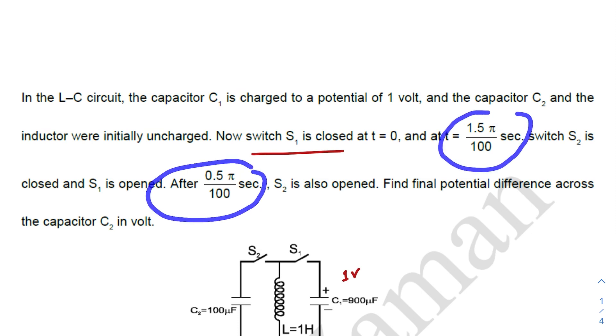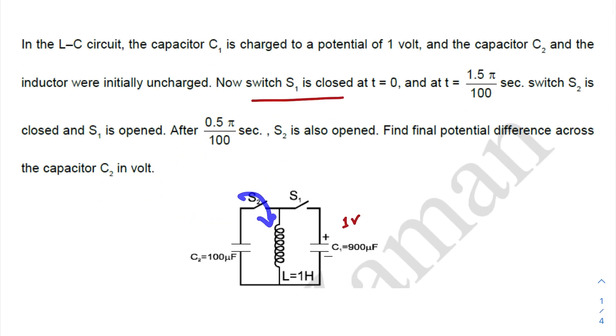Now what happens? Switch S2 is closed and S1 is open. After 0.5π/100 second of the second incident, meaning after switching on S2, we switched on S2, and after this amount of time S2 is also open. We need to find out the final potential difference across the capacitor C2 in volts.